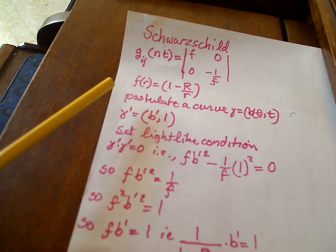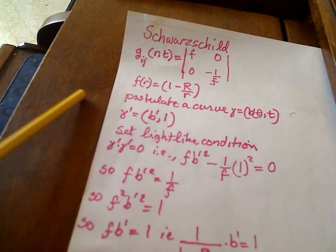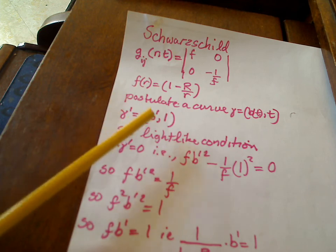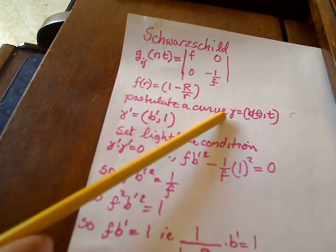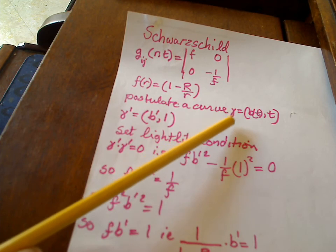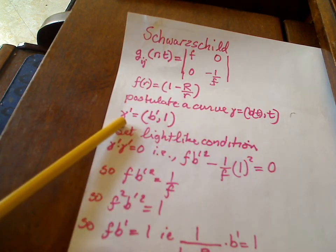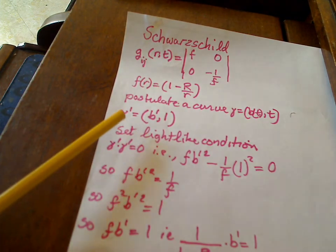So now here's how we're going to come up with our light-like geodesic. Just postulate some curve of the form b(t) where b is some function of t, comma t. You can see that the derivative of that is going to be γ' is going to be b', 1.